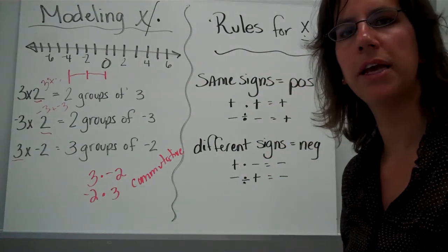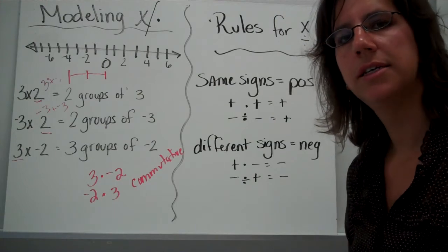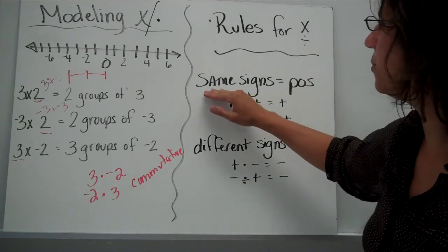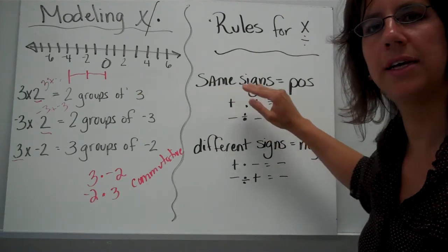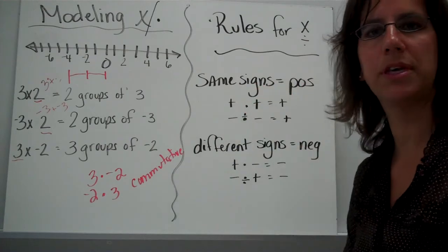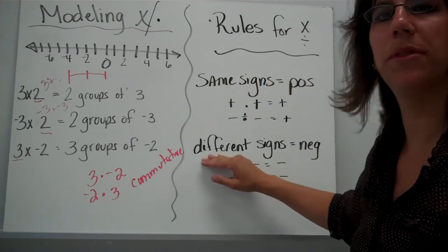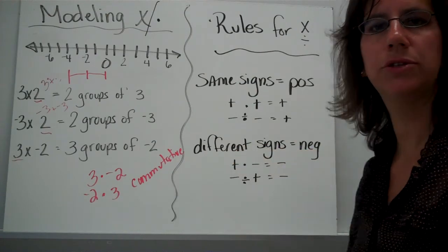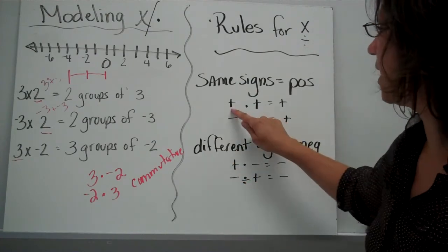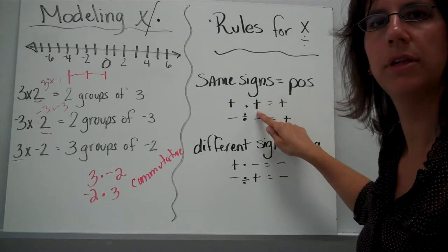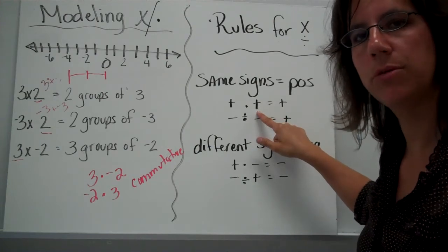Alright, here are the rules for multiplying. If you need to pause the video, you can to copy those down. If you have 2 numbers and the signs are the same, your answer is always going to be positive. If you have 2 numbers where the signs are different, then your answer is going to be negative. So a positive times a positive is positive.